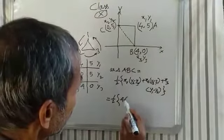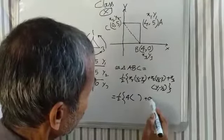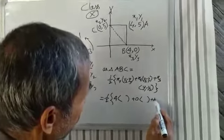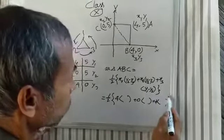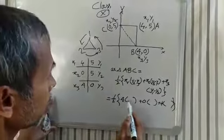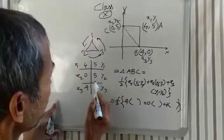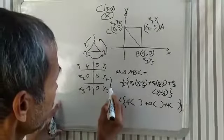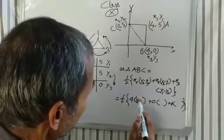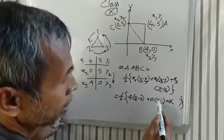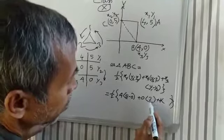So we have 4 into (y2 minus y3). Now, y2 minus y3 means 5 minus 0, which equals 5. The 0 term is needless to write.